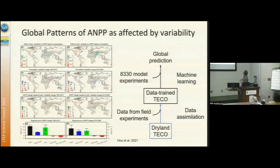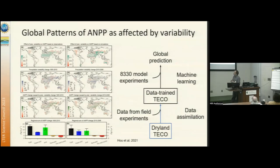We used the data-constrained model to conduct about 8,330 model experiments, then used machine learning to scale up to global scales. The main objective is to understand how increasing intra-annual variability in precipitation in the future will impact ecosystem productivity.